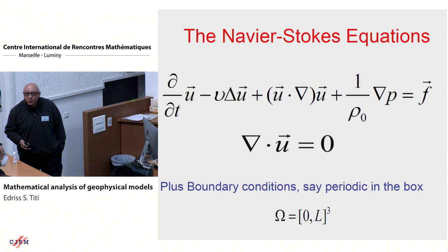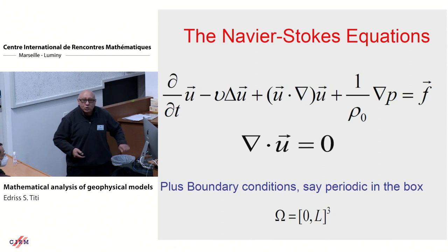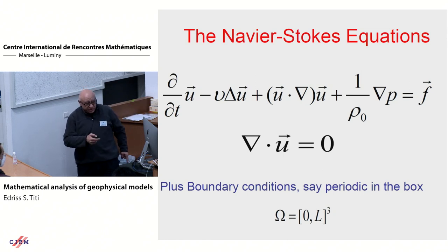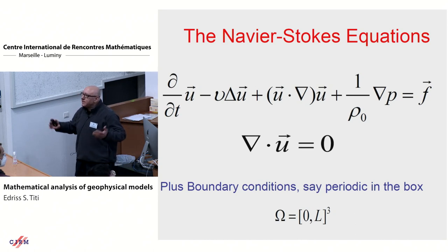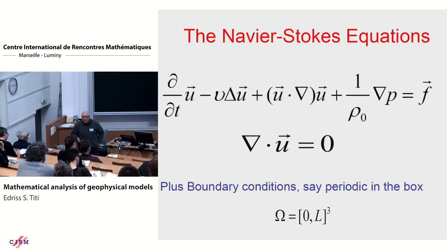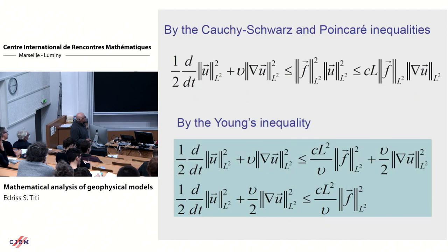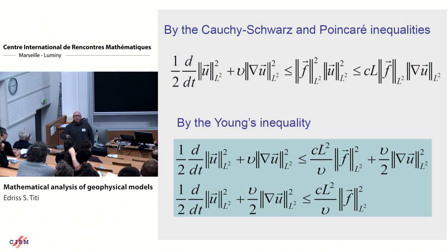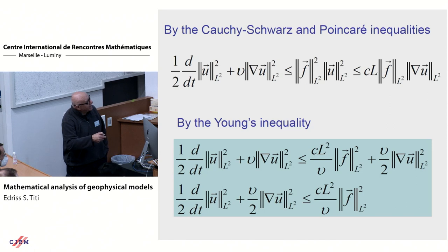This is the Navier-Stokes equation. Mathematical physicists and mathematicians replace the right-hand side by F to disconnect from the rest of the world, but I would like to keep the force. In my original model it was the temperature coupled on the right-hand side. Can you say something about these equations? If you multiply by U and integrate over the domain, and use the fact that the nonlinearity, because of incompressibility, disappears, one can show the kinetic energy of the velocity field satisfies estimates. Using Cauchy-Schwarz and then Young's inequality, this is the balance for the energy.